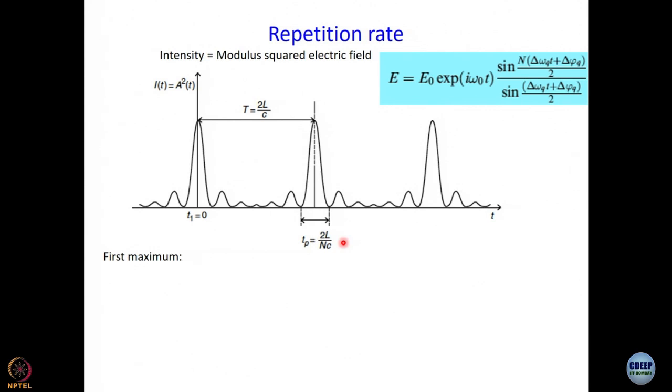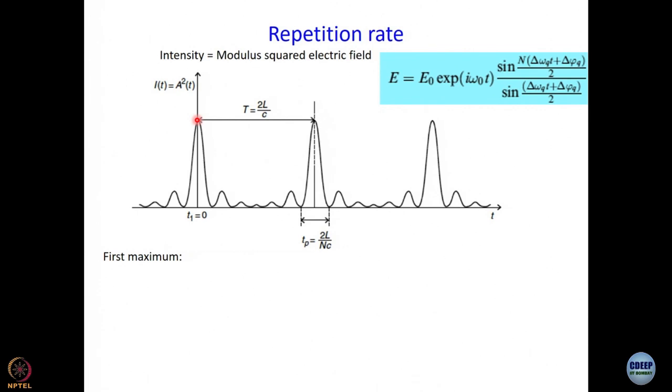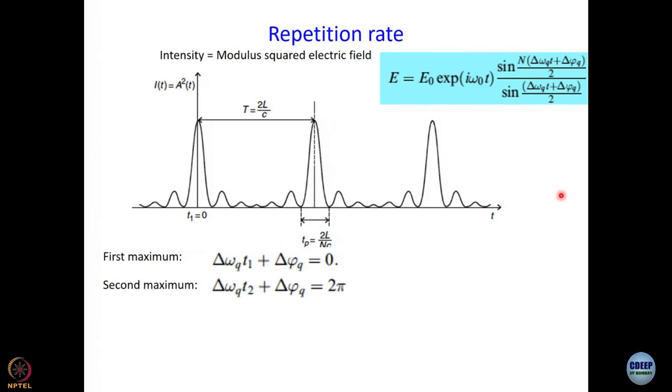Now let us derive the repetition rate. Repetition rate is the time between two maxima. The function sin²(Nx)/sin²(x) has a maximum where the argument x = 0 — a removable discontinuity — so the first maximum occurs where Δω_Q·t₁ + Δφ_Q = 0, and the next at 2π. Capital T = t₂ − t₁. Since Δφ_Q is constant (independent of time), it cancels when we subtract: Δω_Q·(t₂ − t₁) = 2π, so T = 2π/Δω_Q.